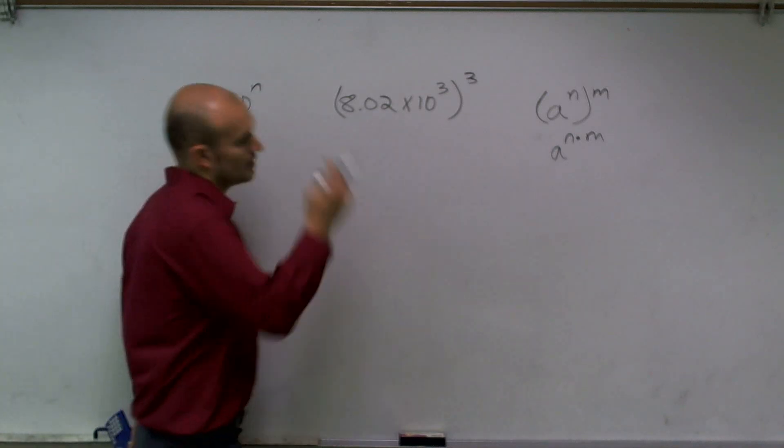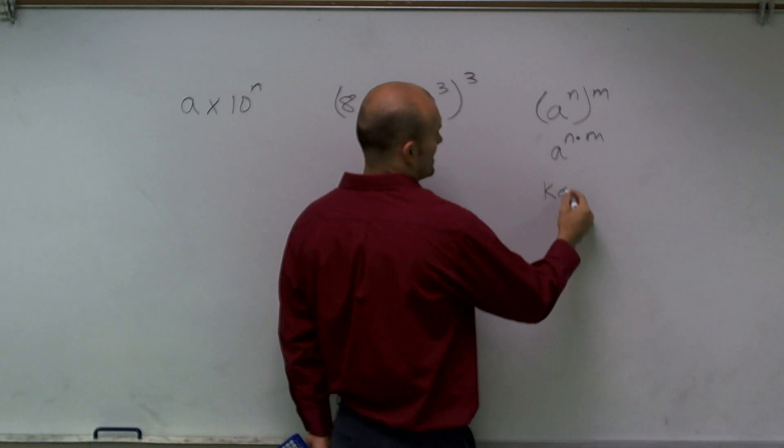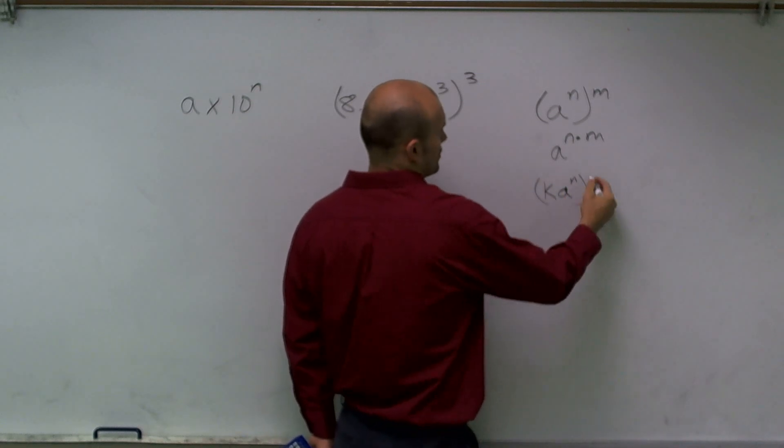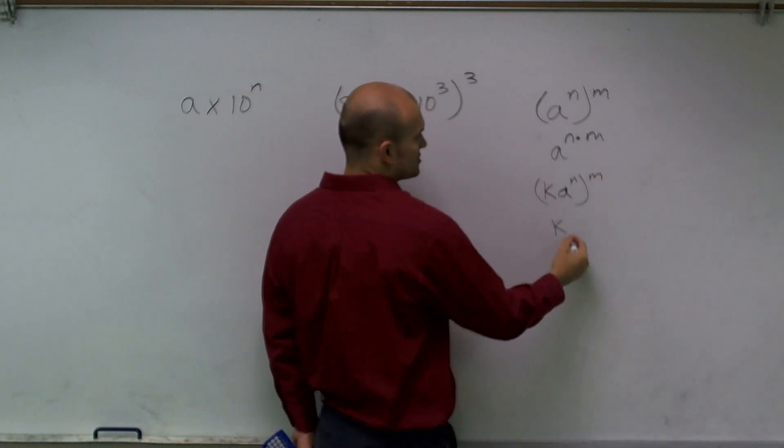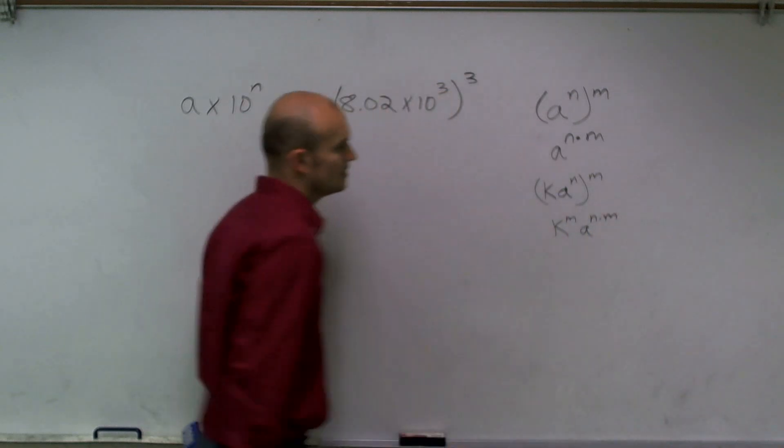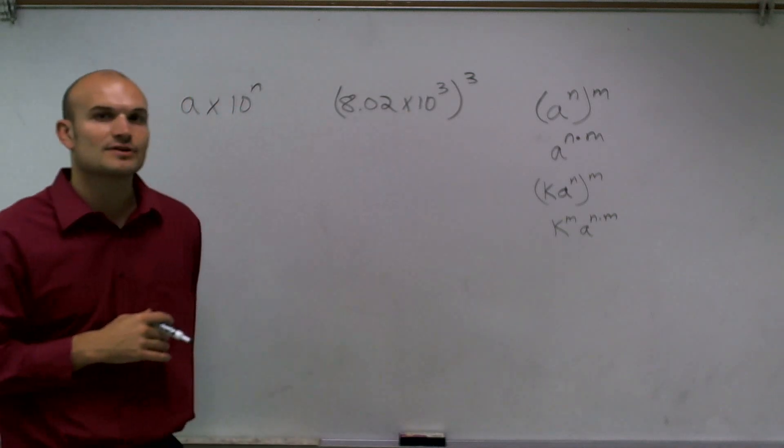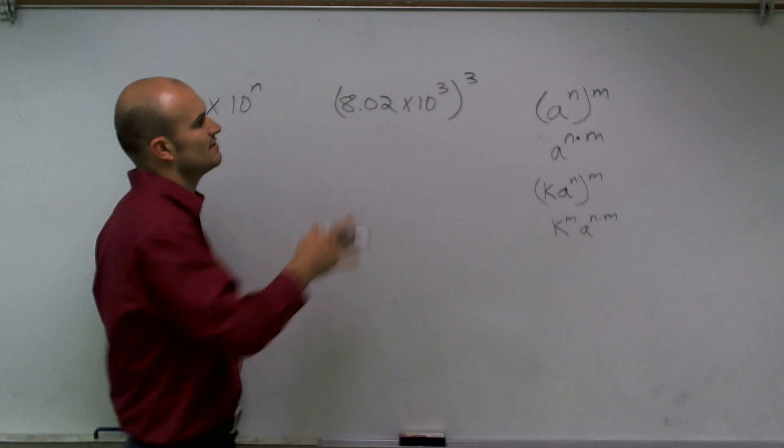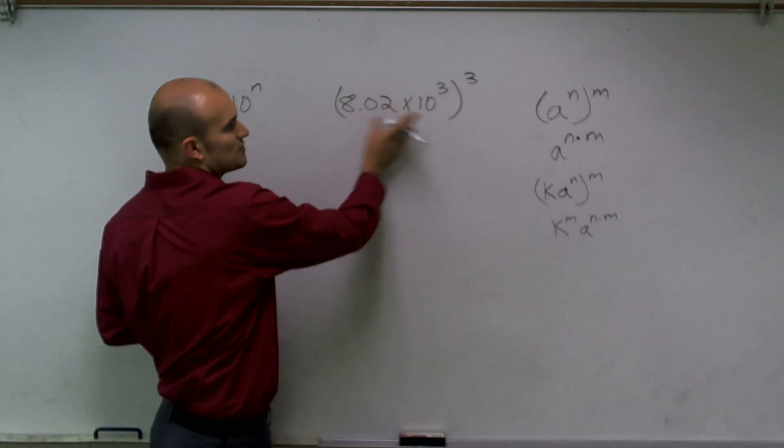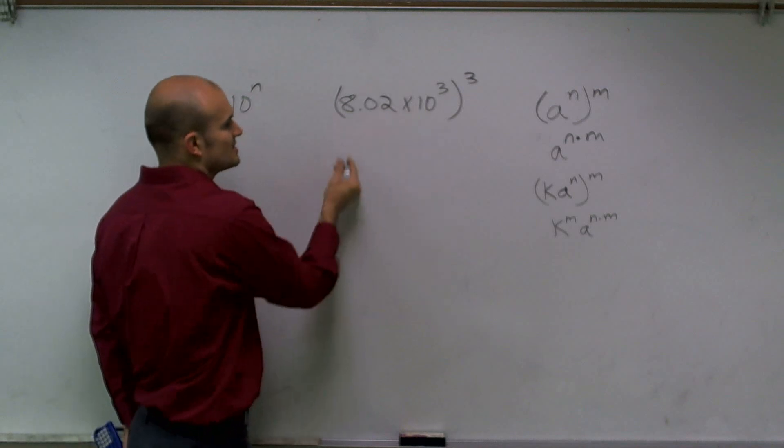So another thing that I should also tell you is if I had k times a to the n raised to the m, that's also going to mean k to the m times a to the n times m. So that m is going to distribute to both of them. And we're going to use that for our scientific notation because when we multiply and divide, we multiply and divide the first two terms, and then we do the times 10 separately. So this is going to be the same thing.